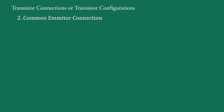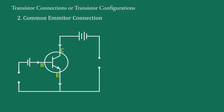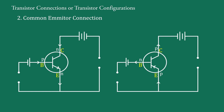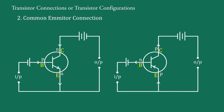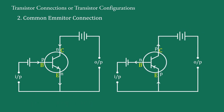Now, common emitter connection. This is the common emitter circuit for NPN transistor and this is for PNP transistor. Here the emitter is common at input terminals and at output terminals, so it is called common emitter connection. In this circuit the base is of P type and is connected with the positive terminal of the battery, so it is forward biased. The collector is of N type and is connected with the positive terminal of the battery, so it is reverse biased. In both circuits, base is forward biased and collector is reverse biased.